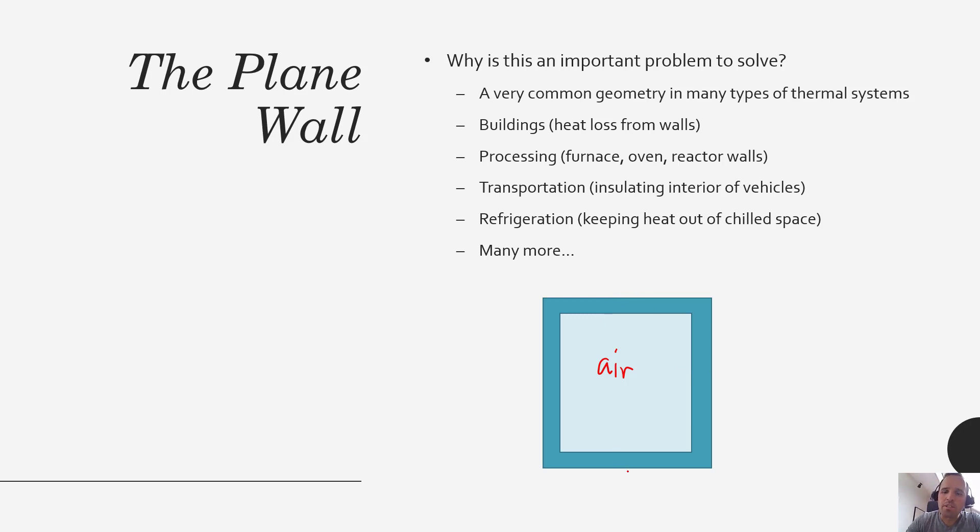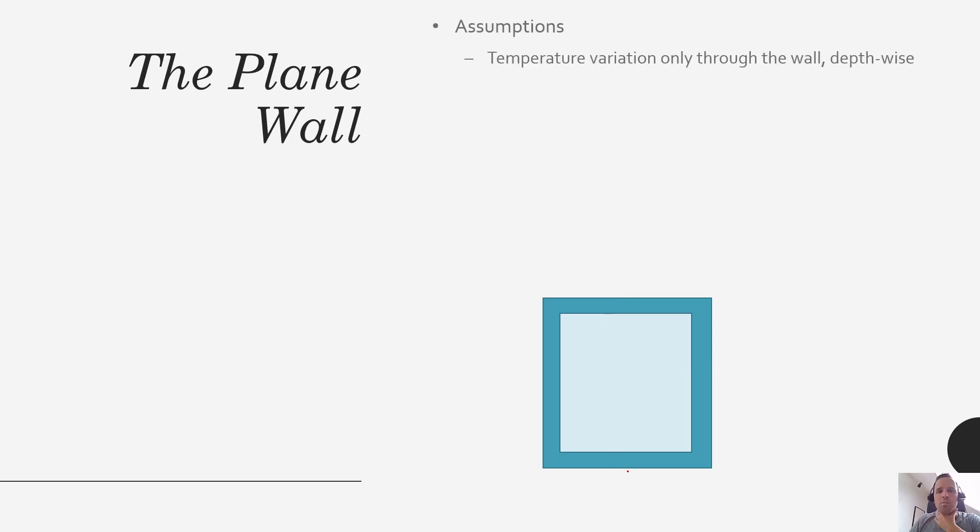One of the assumptions—there are a lot of different assumptions that we'll make when we're talking about plane walls—as we've discussed several times, one of the main assumptions that we make is that the temperature variation is only through the wall depth-wise. So we would consider temperature variations in this direction.